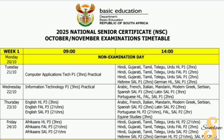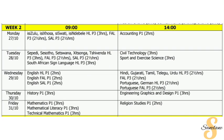As we go through the timetable, we will look at each week and the subjects we are going to be covering on this channel. Starting with Week 1, we are going to be covering English Paper 3 — or rather, the preparation for English Paper 3 that you will be writing on the 23rd of October. So you can expect the scope as well as essay writing.